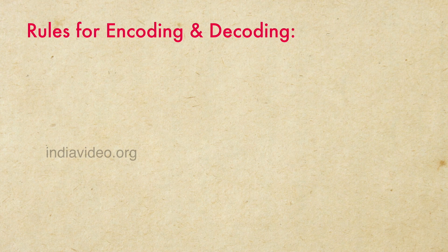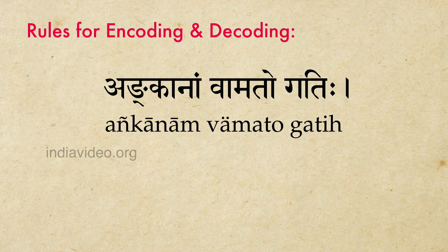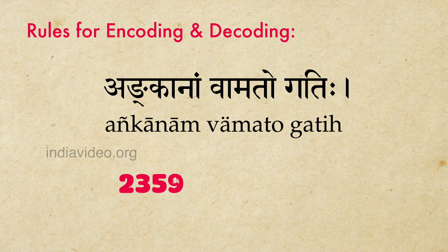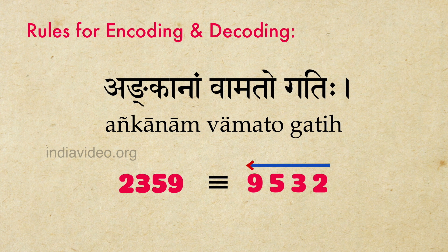A few simple rules have to be followed while encoding and decoding numbers under the Kattapayadi system. The numbers move in their place value from left to right — the least significant decimal place is written first on the left and the most significant is written last on the right. The decoding would work from right to left. For example, the number 2359 will be written in Kattapayadi as 9532 but has to be read as 2359.